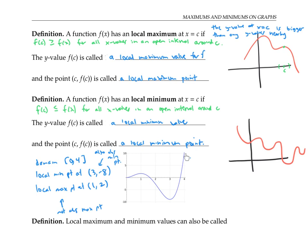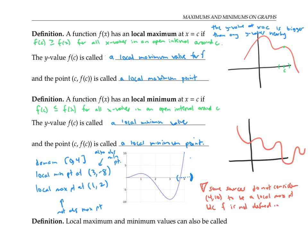Different sources use different conventions as to whether the point four, 10 up here counts as a local maximum point or not. Some sources do consider it a local maximum, since it's the highest point anywhere nearby. But other sources say that it doesn't count as a local maximum for the technical reason that you can't get an open interval of values around four, because the function is not defined in an open interval around four, because its domain stops at four. So I'll just write this as a caution that some sources do not consider four, 10 to be a local max point, because f is not defined in an open interval around x equals four. Local maximum and minimum values can also be called relative maximum and minimum values.